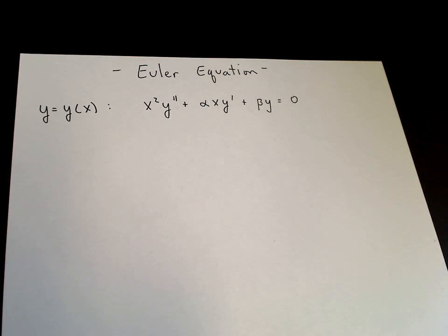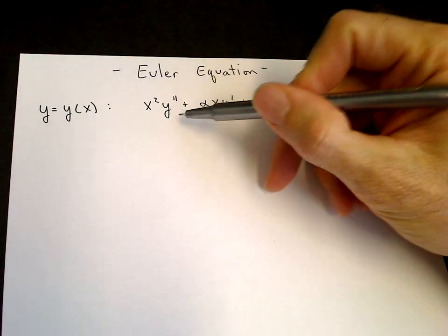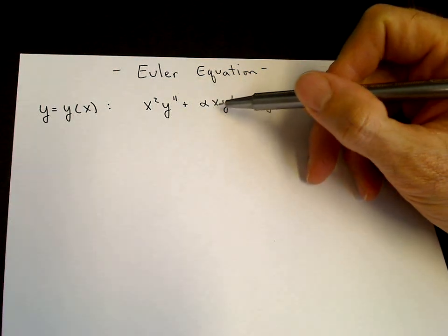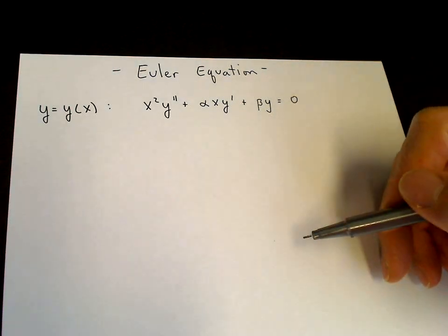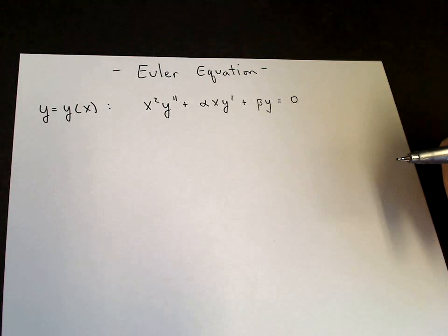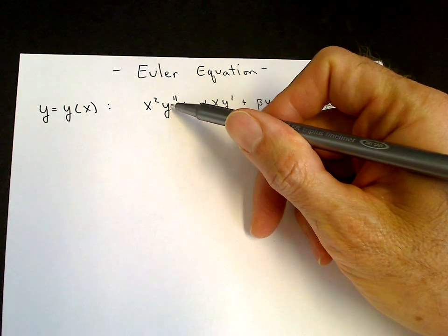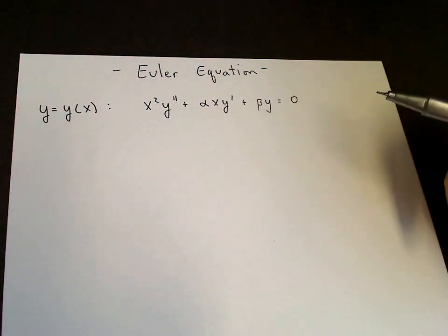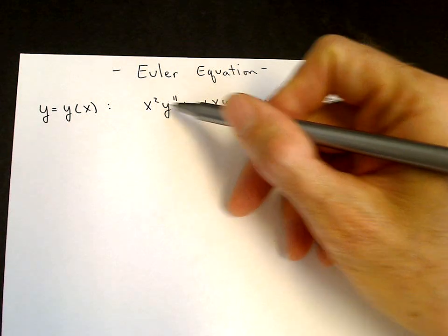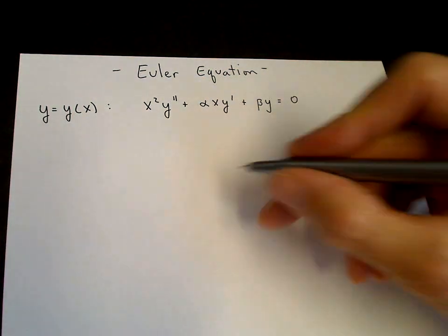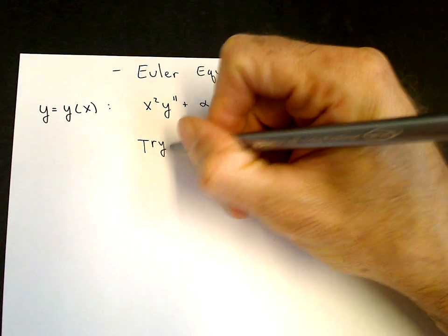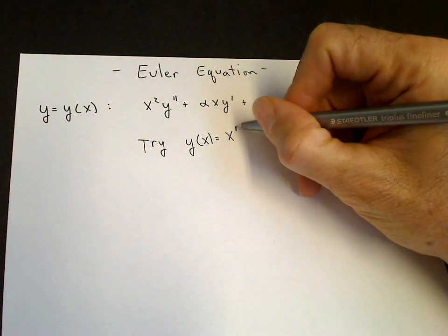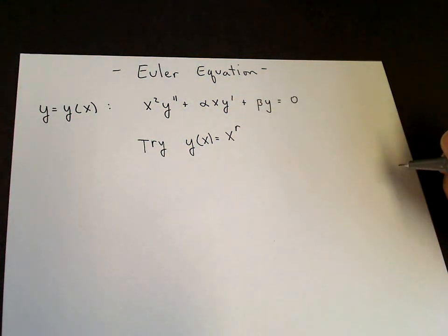We want to find an appropriate ansatz. Because we take the second derivative multiplied by x squared, the first derivative multiplied by x, and the function itself — if you're familiar with the power law, the power law drops down a power of x by one with each derivative, and then we multiply by a restoring power of x. So the appropriate ansatz here could be a power law: y of x equals x to the r, where we don't know what that exponent is.